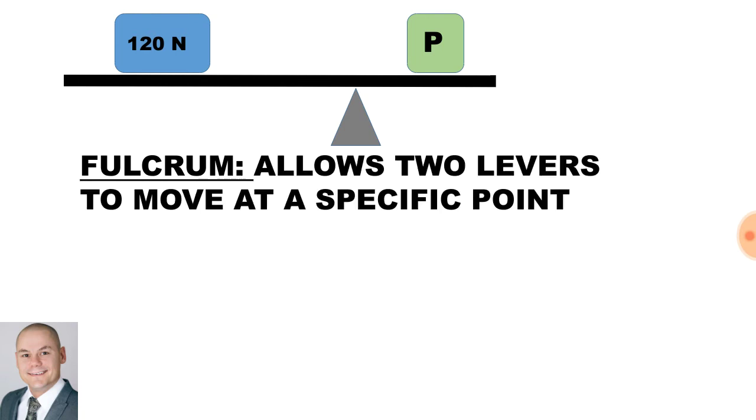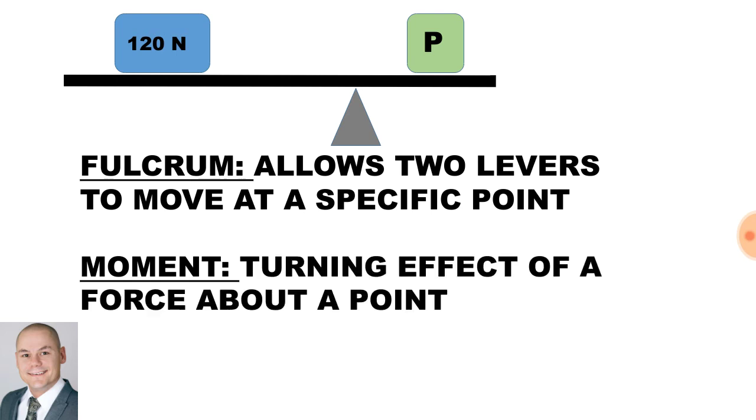Now, our fulcrum allows two levers to move at a specific point. A moment is a turning effect of a force about a point.